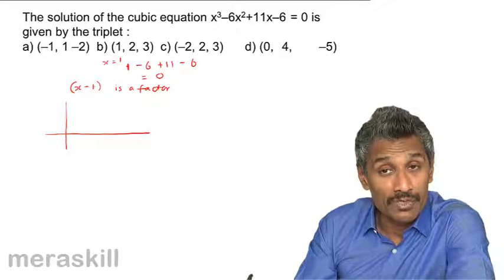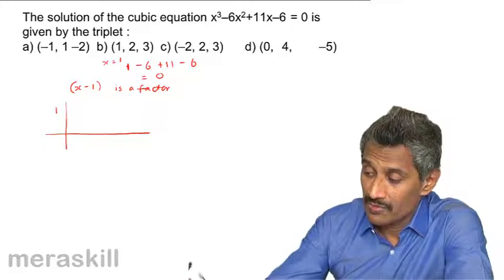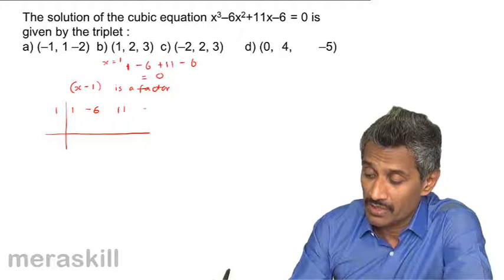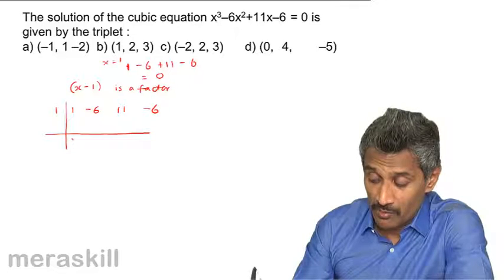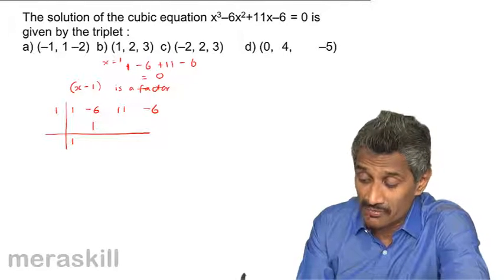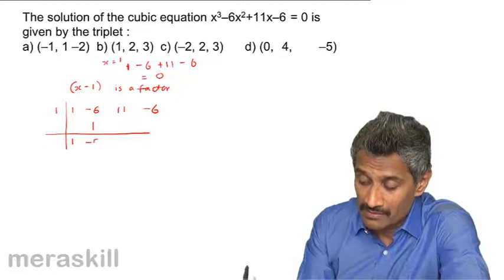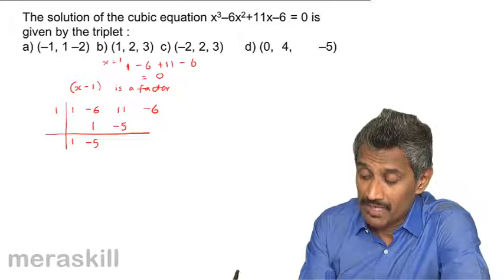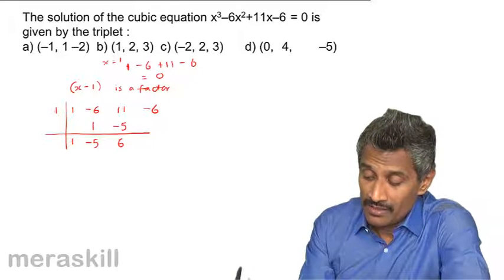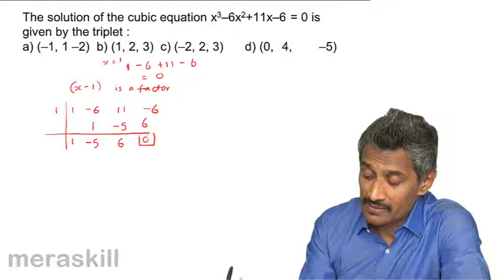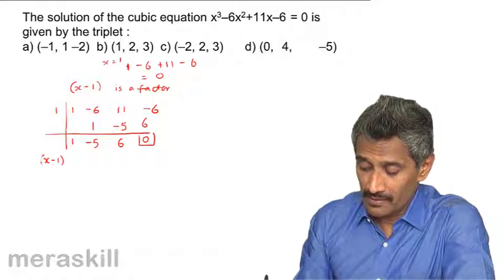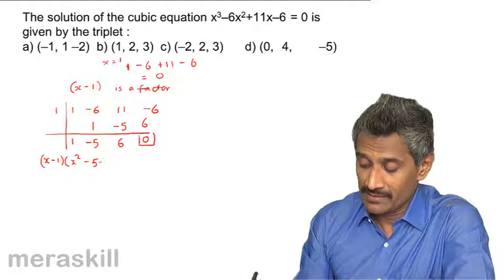For synthetic division, we put the opposite of -1, which is 1. Write down the coefficients: 1, -6, 11, -6. Copy the first coefficient as-is: 1. Then 1 × 1 = 1; -6 + 1 = -5. Then 1 × (-5) = -5; 11 + (-5) = 6. Then 1 × 6 = 6; -6 + 6 = 0. This gives the first factor as x - 1 with quotient x² - 5x.